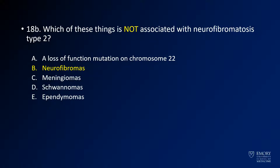Neurofibromatosis type 2, interestingly, does not have neurofibromas associated with it — that tends to be neurofibromatosis type 1. With type 2 neurofibromatosis you tend to get all of these other lesions. It's also caused by a loss of function mutation on chromosome 22. You can remember that because neurofibromatosis type 2 has 22 letters, so it's easy to remember that it's on chromosome 22. Nerdy but true.